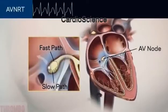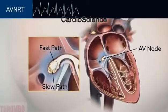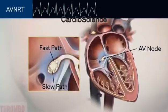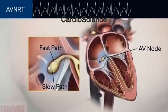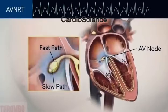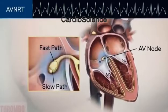In atrioventricular nodal reciprocating tachycardia or AVNRT, an electrical circuit is created between the two electrical paths in the atrioventricular node, causing the heart to beat rapidly.